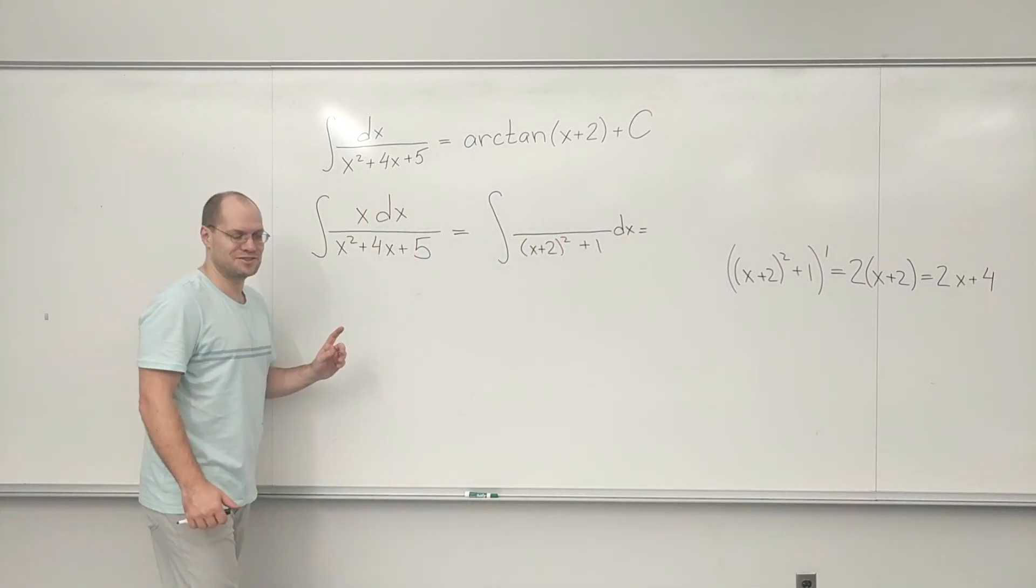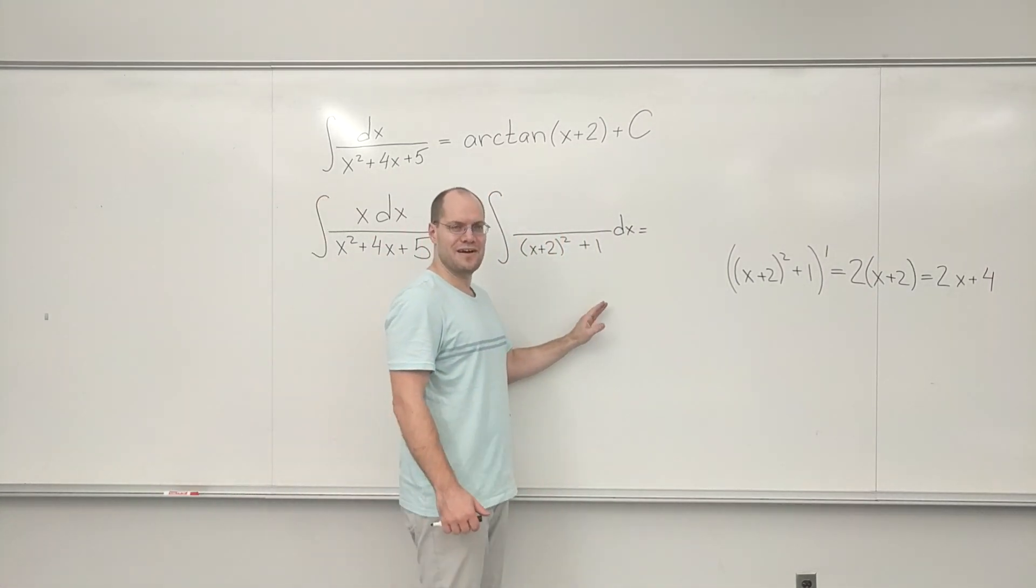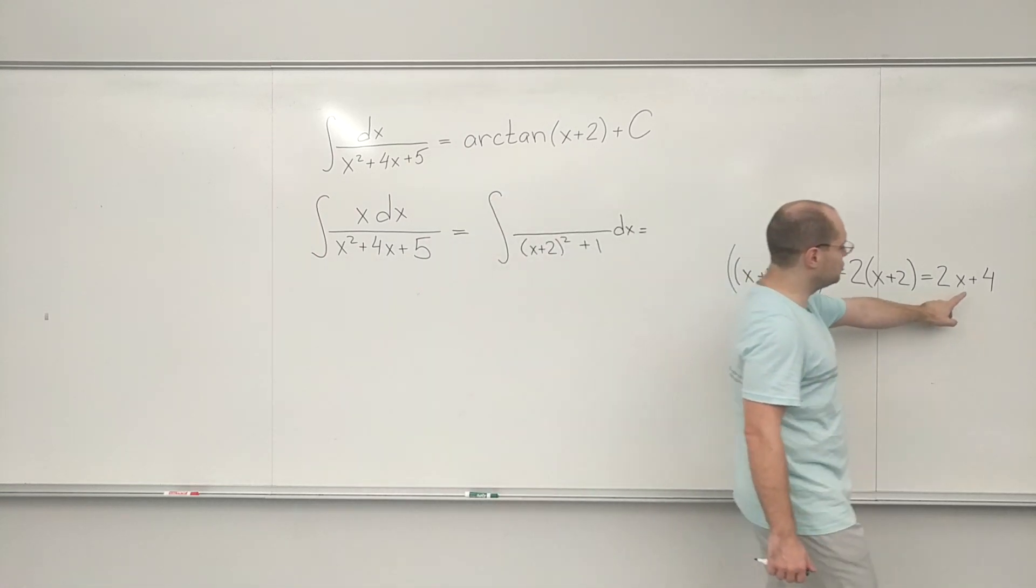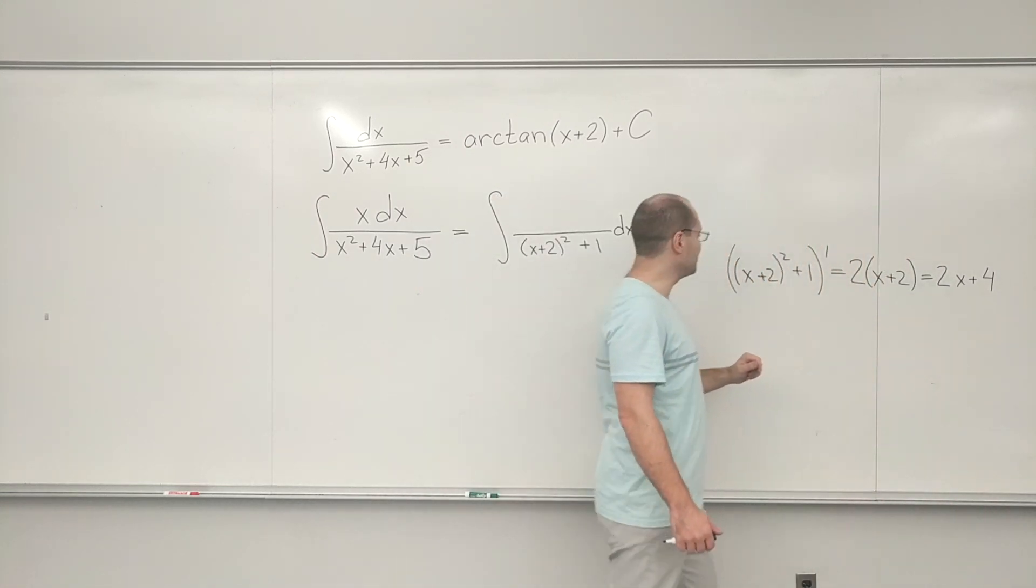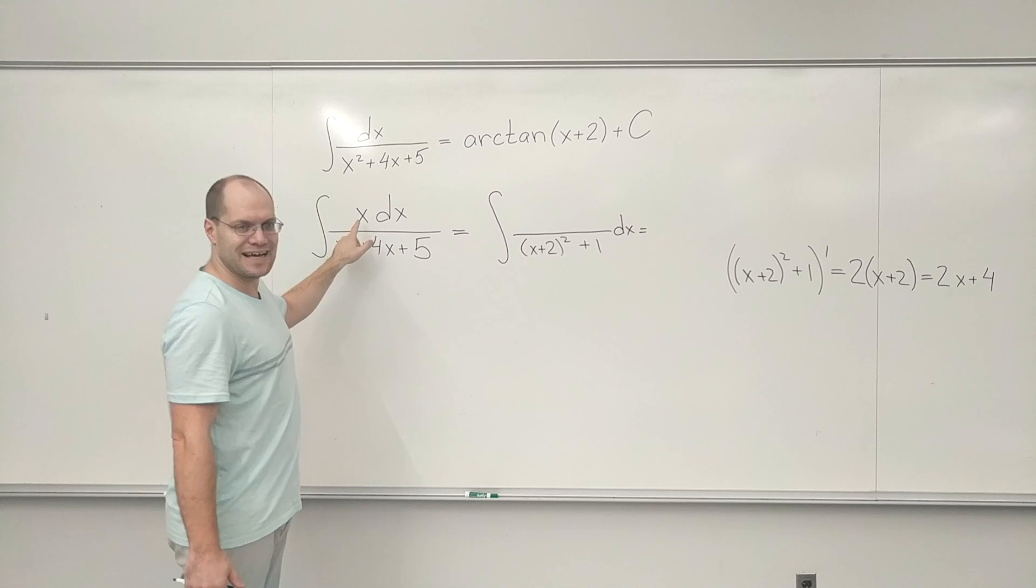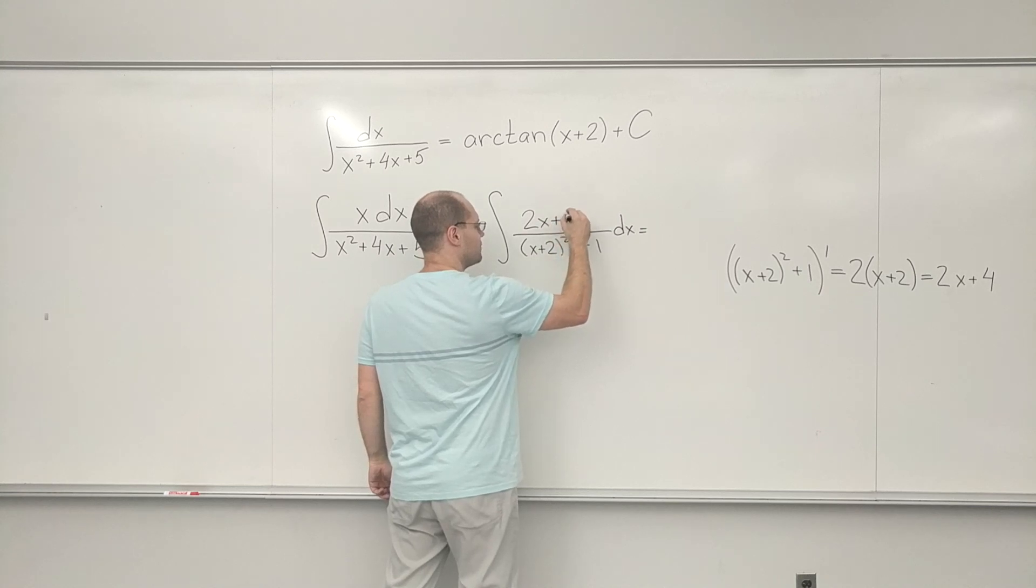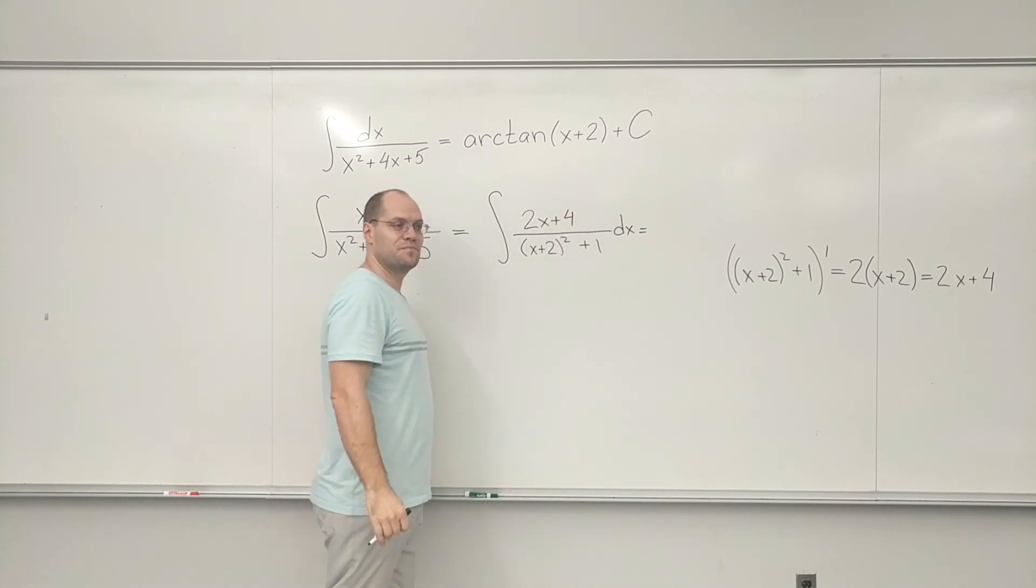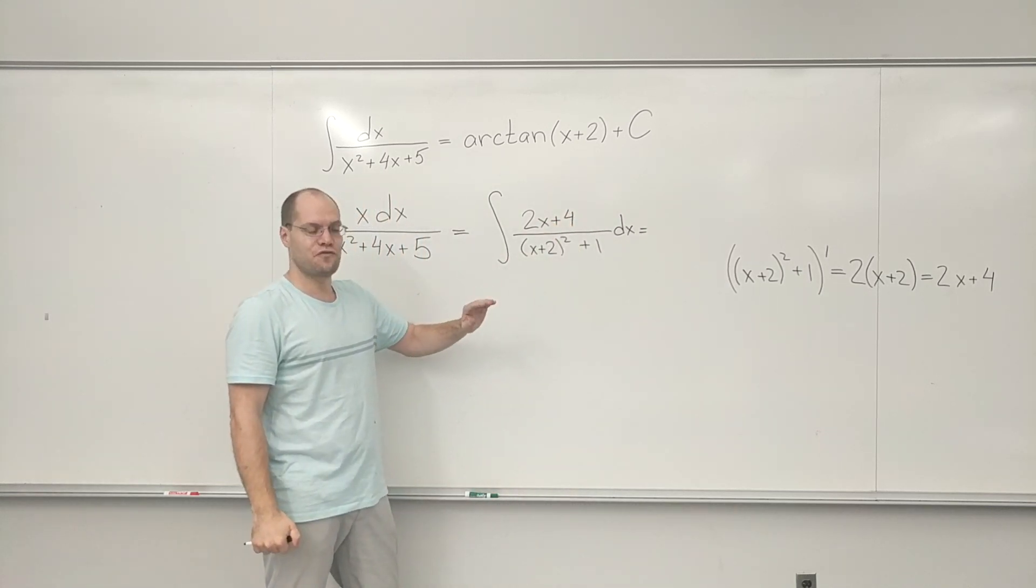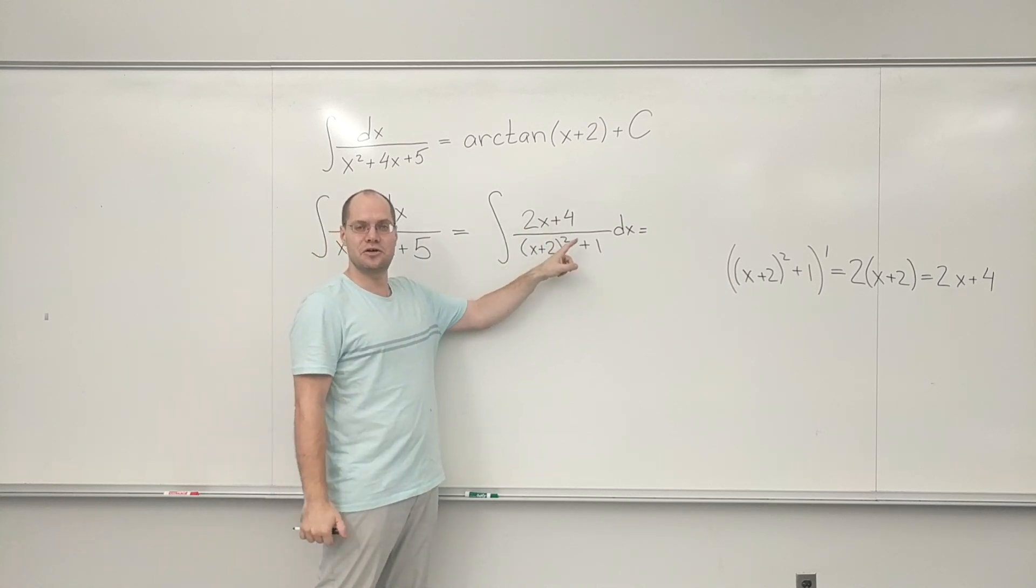Okay, here's what I'll do, which will save you a lot of algebra. I need 2x plus 4 in the numerator. But I only have x. Well, I'm just going to write what I need. 2x plus 4. This is what I need. And I will turn it into a form that will actually make it equal to x.